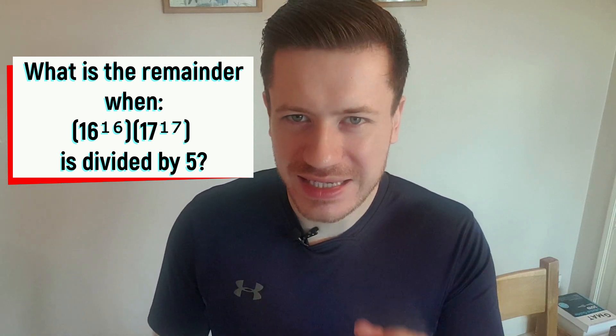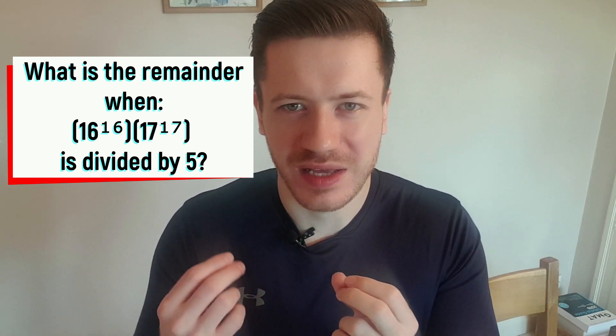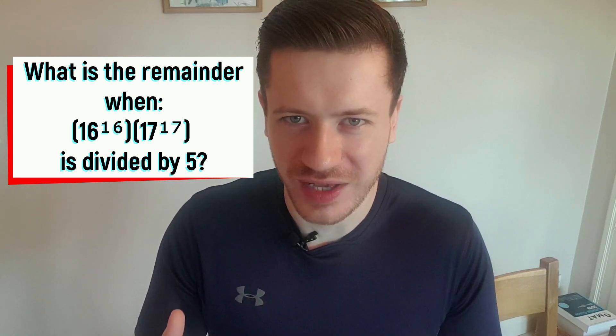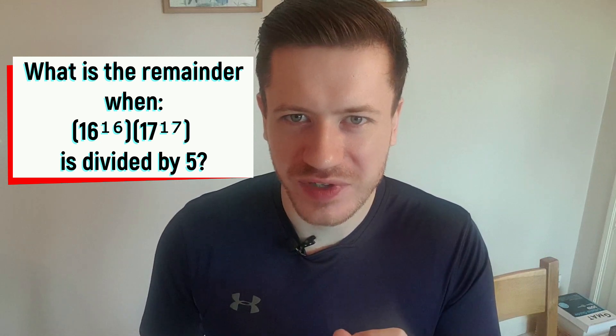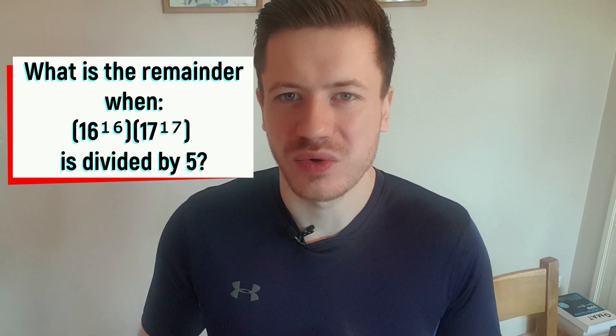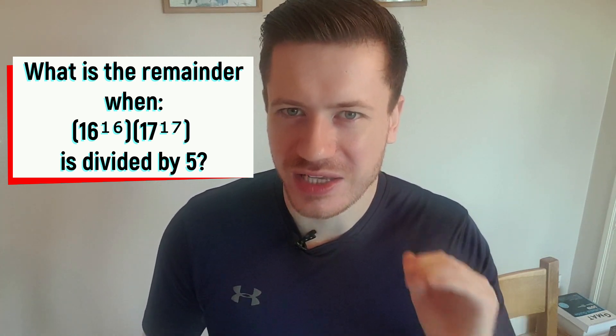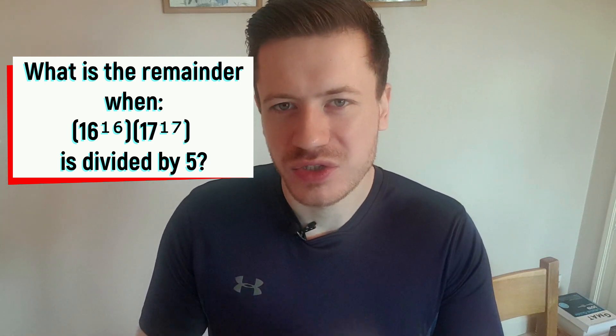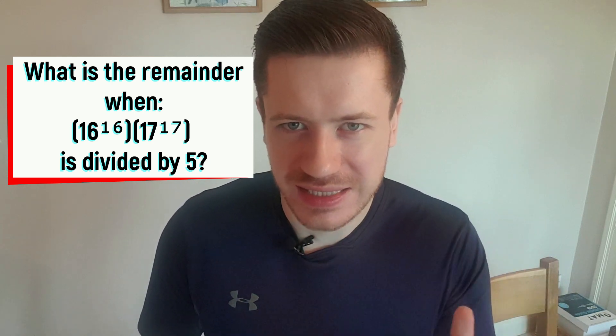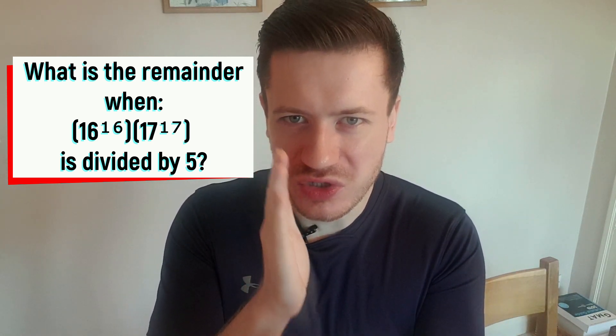Time for one ultimate question that really tests if you understand this units digit shortcut. What is the remainder when 16 to the power of 16 multiplied by 17 to the power of 17 is divided by five? If you'd like, you can pause the video and have a go at this one yourself first, or you can wait to see my explanation. It's really at the upper end of questions. So if you're getting this right, you're doing really well. Okay, first things first, don't be intimidated by the fact that we're dealing with two digit numbers like 16 and 17.